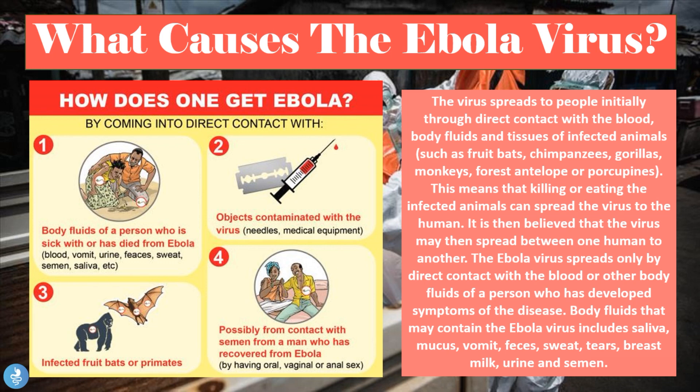It is believed that the virus may then spread between one human to another — so we now have human-to-human transmission once the initial infection is gotten from the infected animal. The Ebola virus spreads only by direct contact with blood or other bodily fluids of a person who has developed symptoms. Bodily fluids that may contain the Ebola virus include saliva, mucus, vomit, feces, sweat, tears, breast milk, urine, and semen.